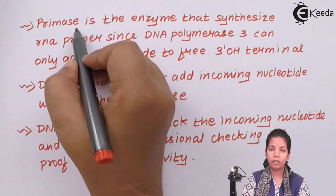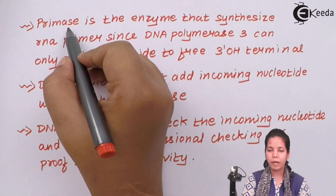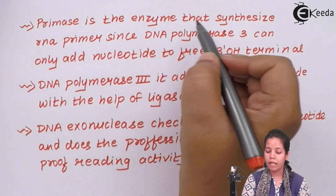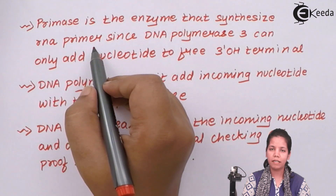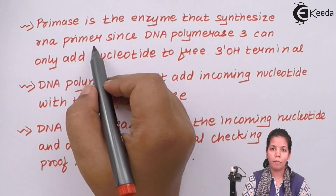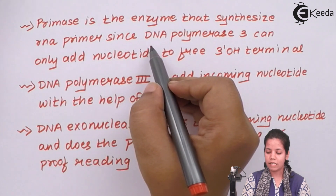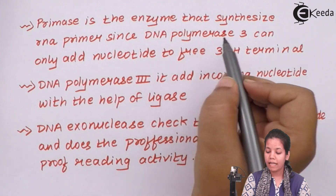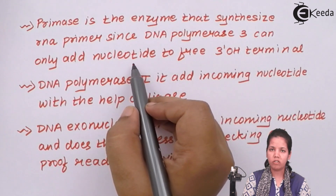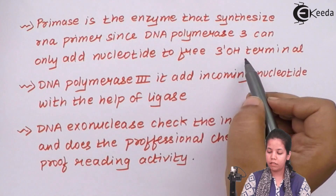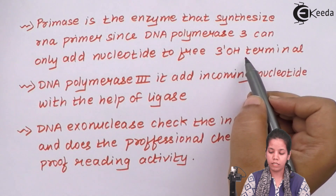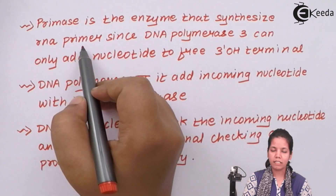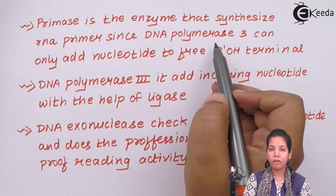The next enzyme after SSB proteins is primases. Primases is an enzyme that synthesizes an RNA primer, which is a sequence of oligonucleotide — just a single-stranded sequence, not a double one. Since DNA polymerase 3 can only add nucleotides (A, T, G, C) to a free 3' OH terminal, an RNA primer must first be attached before DNA polymerase 3 can act.